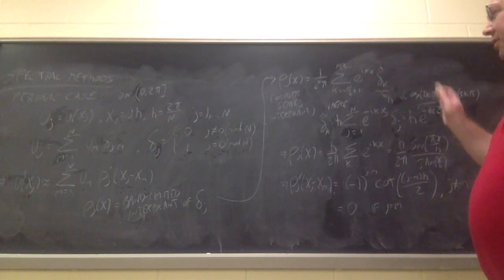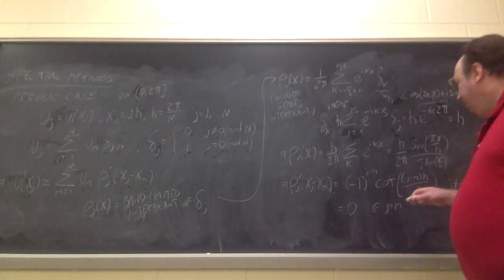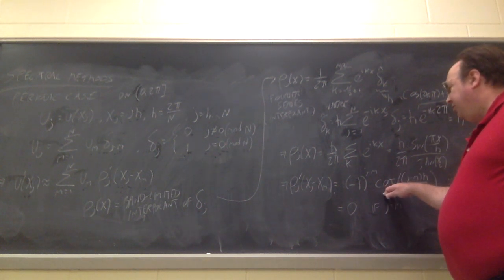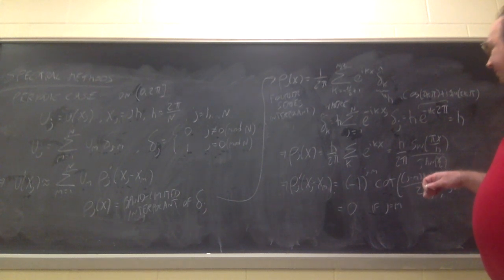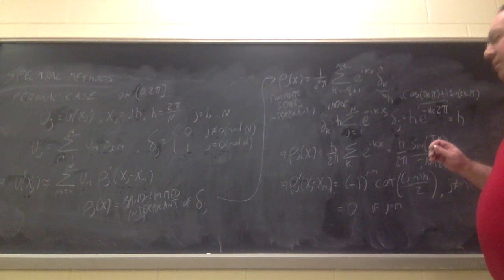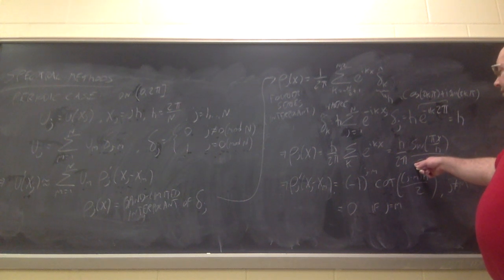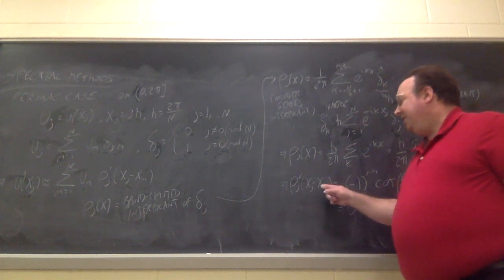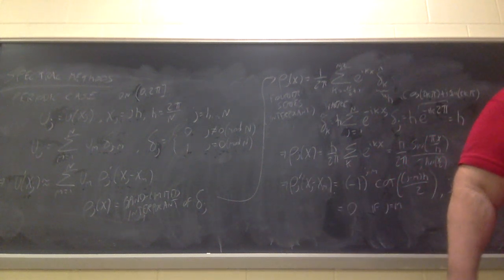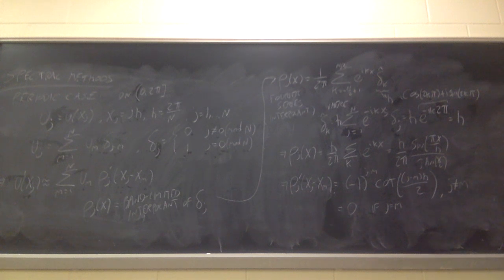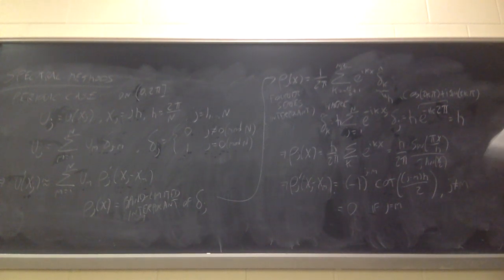What's interesting is that everything done for the first derivative can be applied to the second derivative as well. The only difference is that at the same stage, you take the second derivative of p_j(x) and evaluate at x_j − x_m. It turns out you actually do get something non-zero on the diagonal in that case.